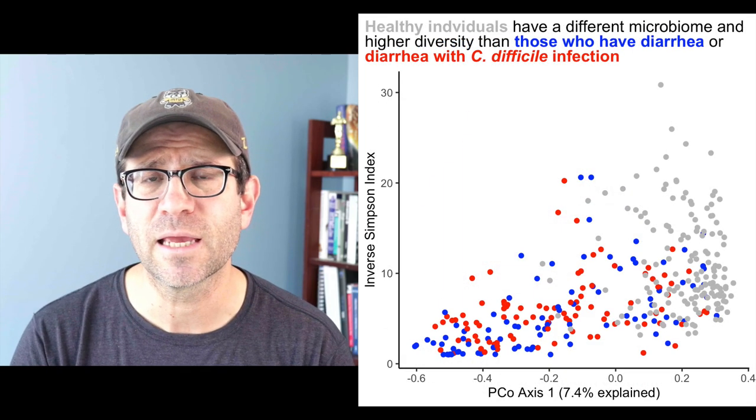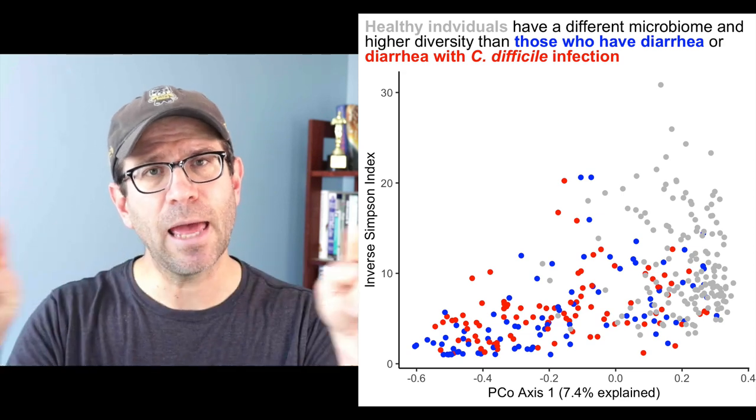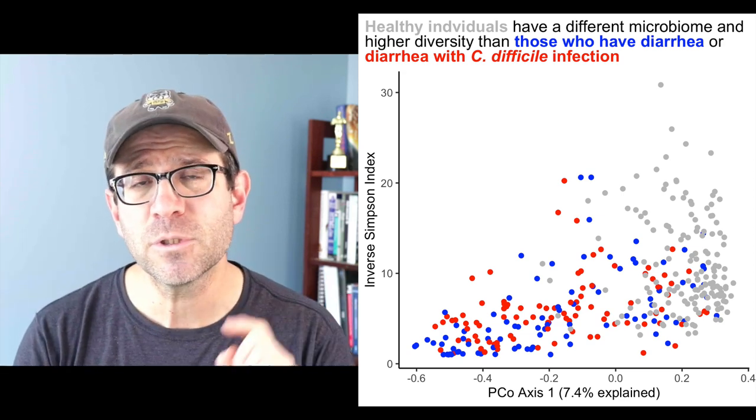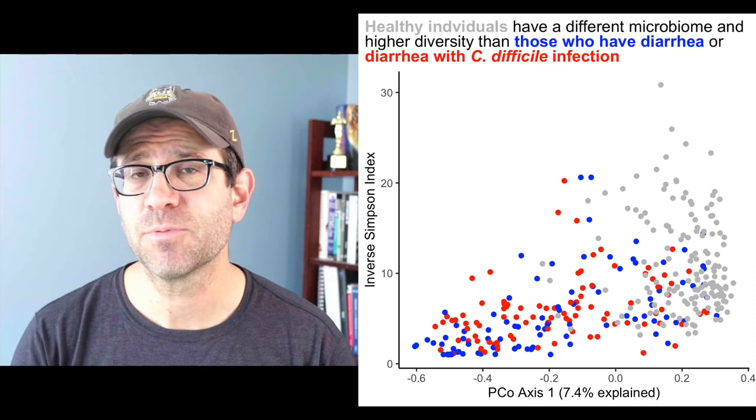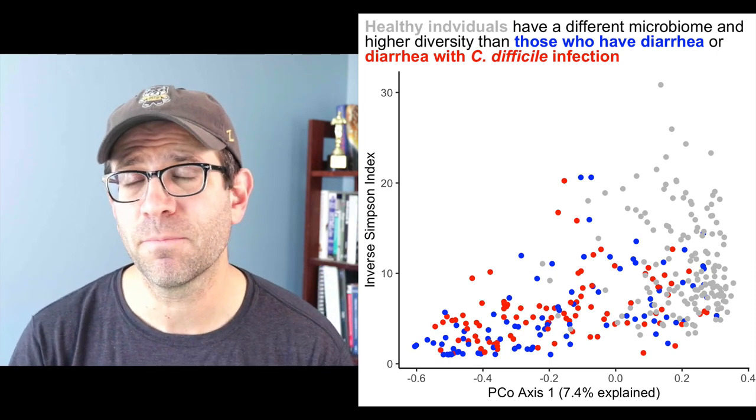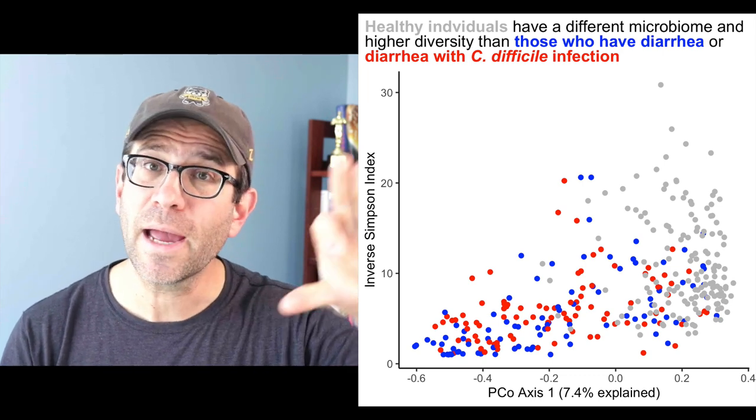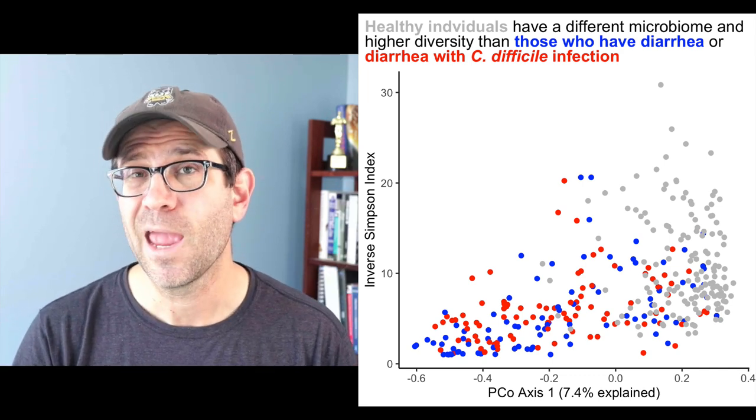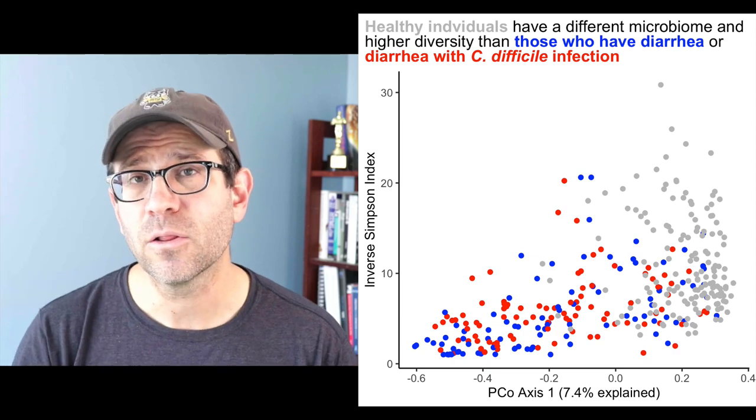An alternative approach that we might think about trying is what happens if on the x-axis we put the first principal coordinate, which explains the most amount of variation in the data. And on the y-axis, instead of putting the second principal coordinate axis, what if we put diversity? That's exactly what we're going to try to do today. Along the way, we'll review some of the concepts and techniques that we've already been working through.